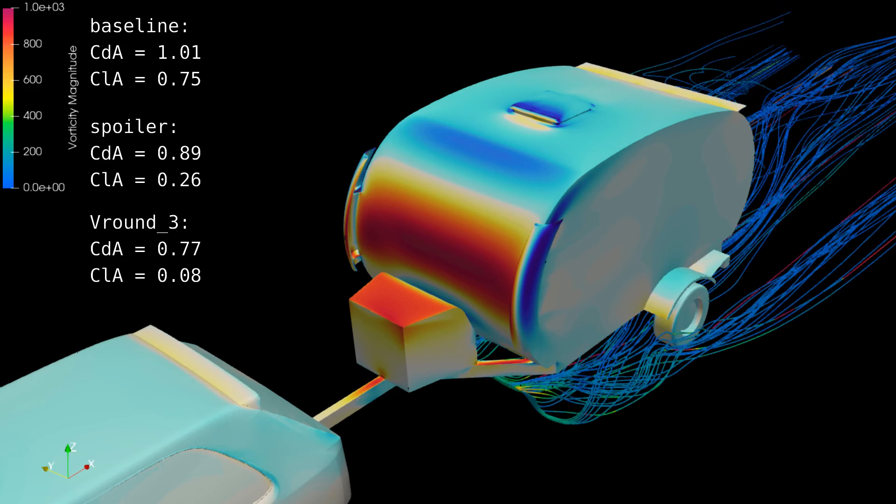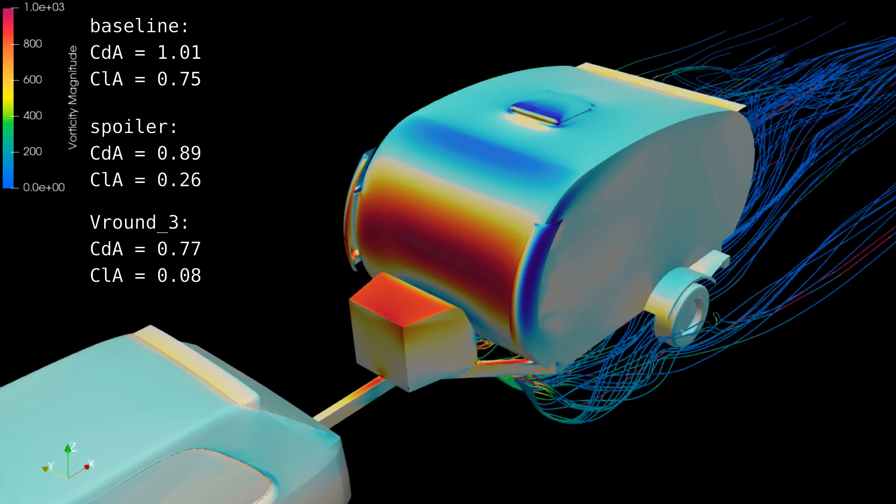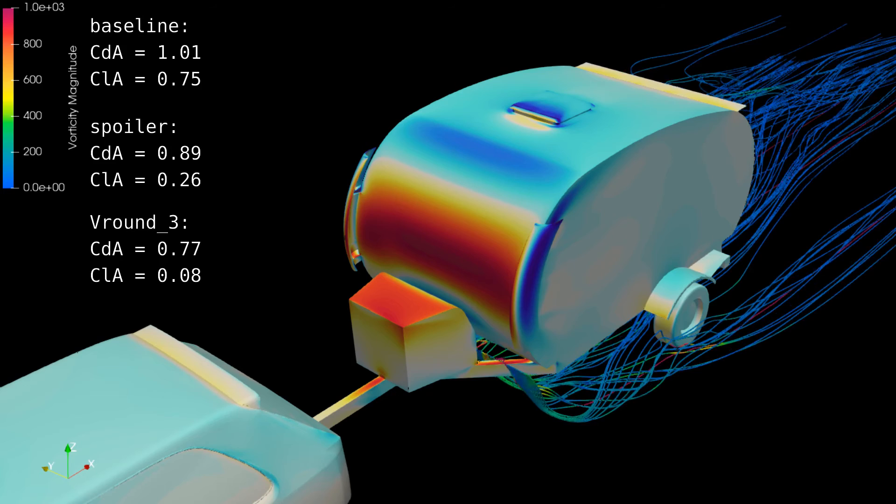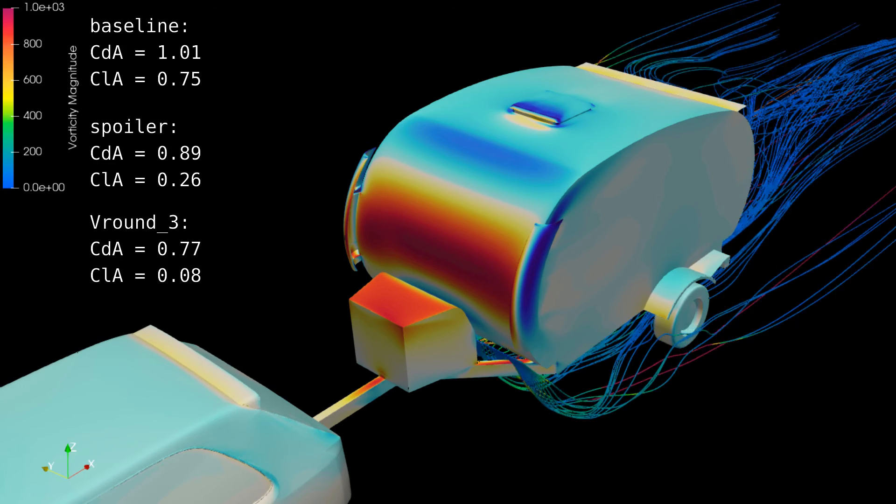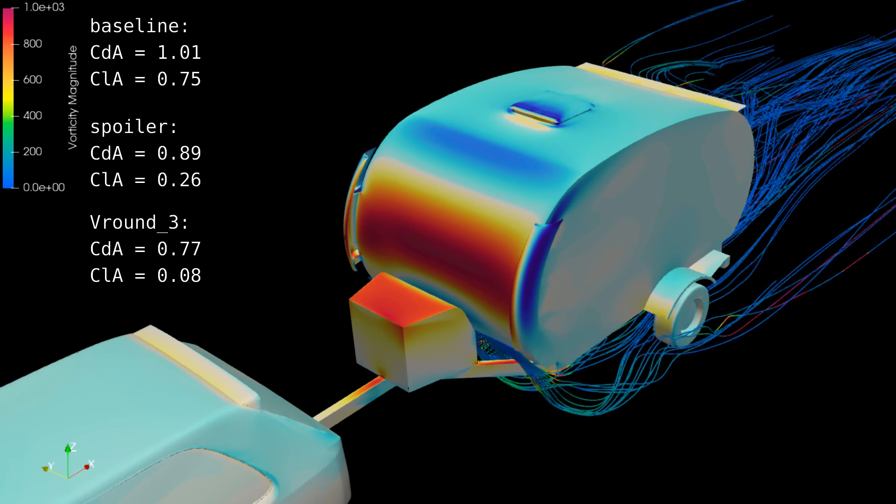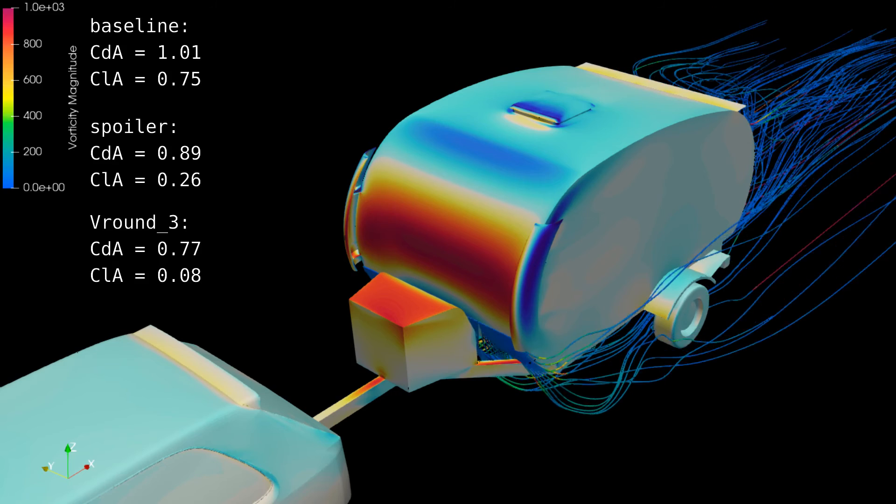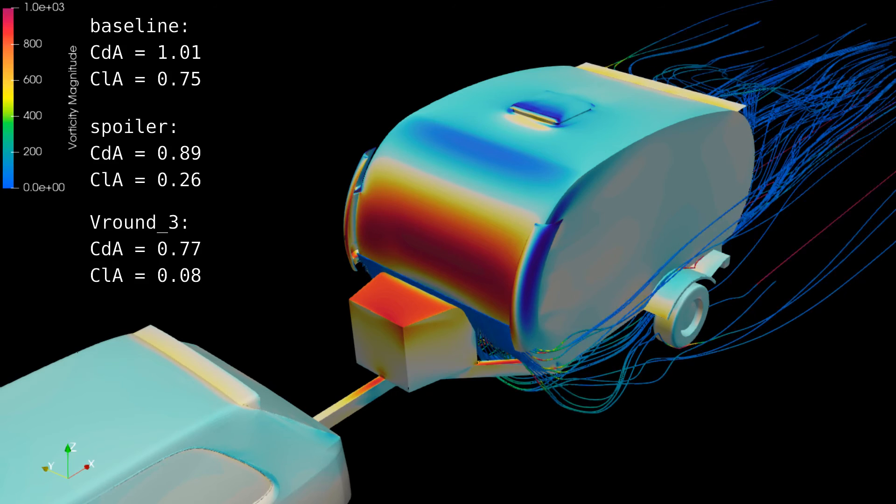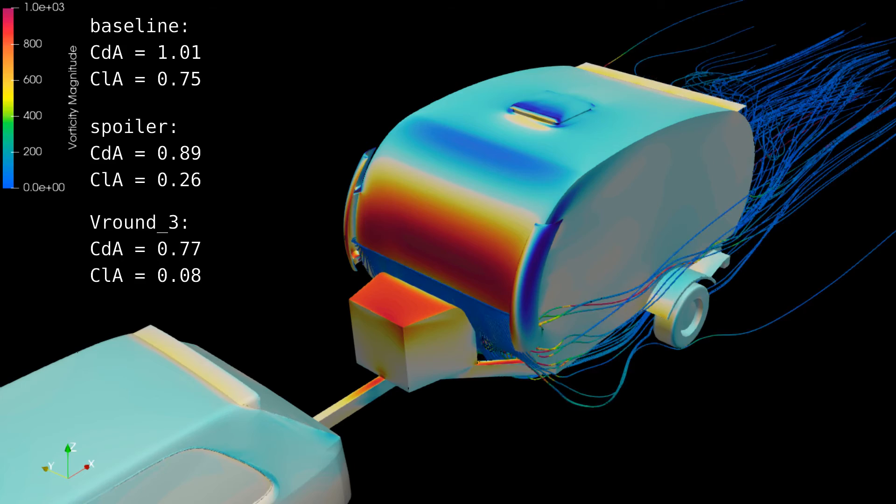It also all but eliminated lift now only 10% remains. We're talking a negligible amount of CLA of 0.08 or 43 newtons at 30 meters per second which is a nice highway cruising speed of 108 kilometers per hour.